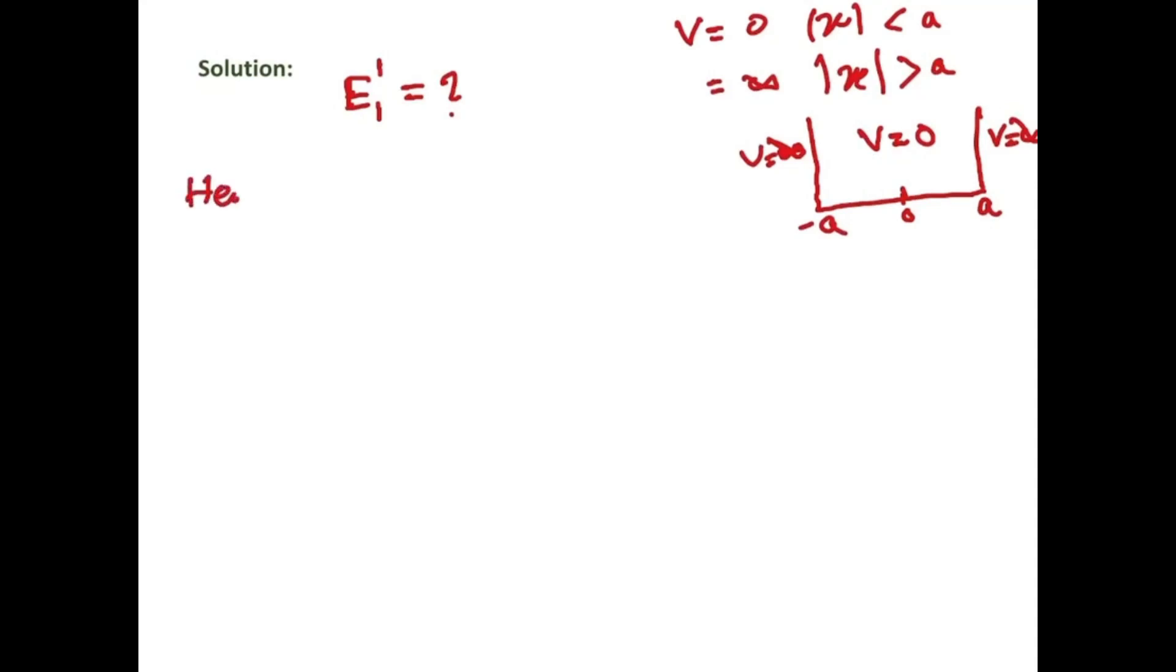So here expression for wave function of first excited state is given by 1 by root a sin pi x by a. Here delta H equals cx electron volt given in the question.